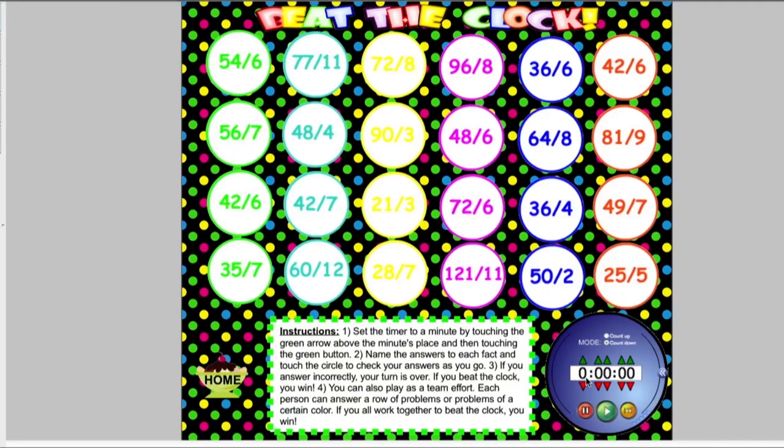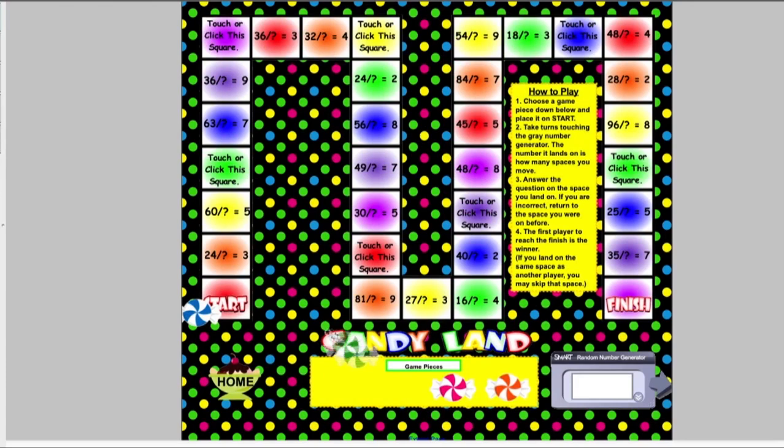The second game is candy land. Students place their own piece of candy on start, touch the random number generator, and go that number of places. On some problems, they must click and be directed to another page to solve a word problem. The first to reach the end wins.